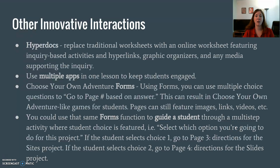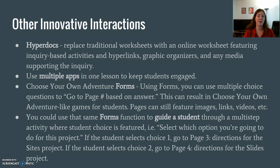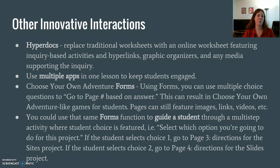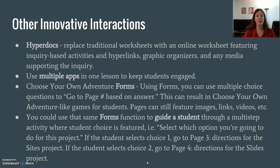They then go over some other innovative interactions, including one of my favorites: the choose your own adventure form. When you do a form and add a multiple choice question, you can indicate that if a child selects a specific answer, you can go to a page based on that answer. For example, you can have them decide whether they're going to go down the left street or the right street — if they go left, they meet Frankenstein; if they go right, they catch a Pokemon. You can also use that same form function in a more practical way to guide a student through a multi-step activity where student choice is featured. For instance, if they select the slides project, they go to the page with those instructions; if they choose the website project, they go to the page for those instructions — rather than kids seeing instructions for two projects when they're only doing one.